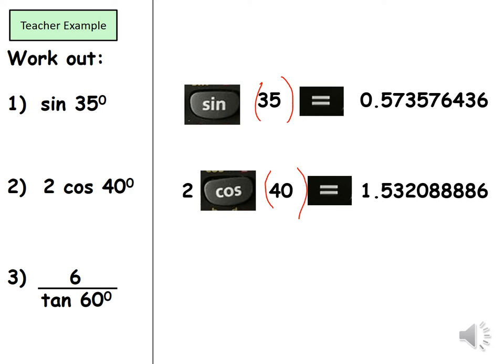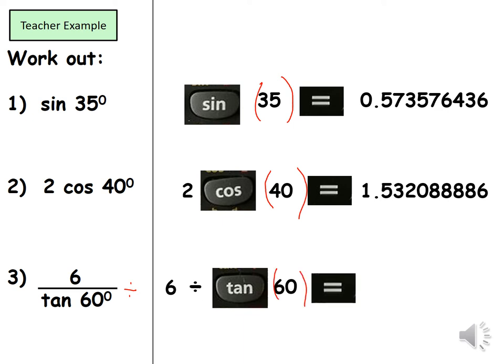For the next one 6 over tan 60, remember this means it's divided by. Again tan. You're going to see an open bracket on a 60. Before that you're going to close it. Then press equals and your answer.